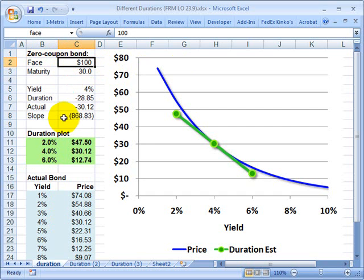My assumptions are it has a face value of $100 and a maturity of 30 years. As a zero coupon bond, it pays no coupons until it is redeemed at maturity for the face value.